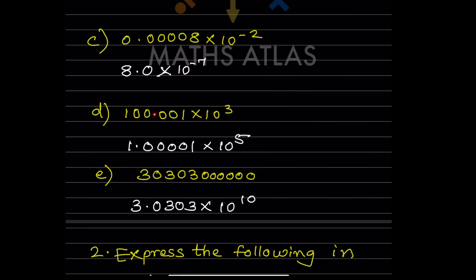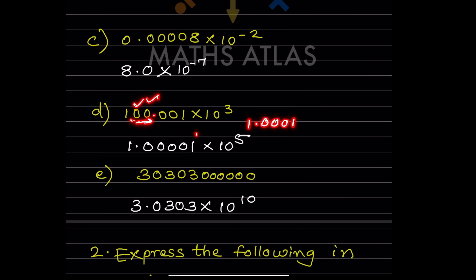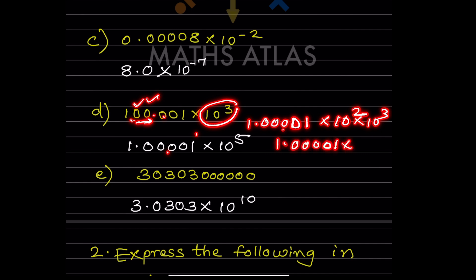For a number like 100.0001, the decimal should be placed after the first digit, giving 1.000001. There are 4 zeros after the decimal, so that is 1.000001 × 10^2. This is already 10^3, so using the same base addition rule we get 1.000001 × 10^5.